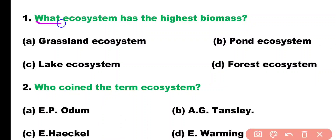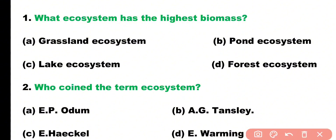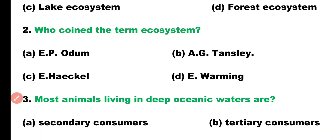Question number one. What ecosystem has the highest biomass? Options: grassland ecosystem, pond ecosystem, lake ecosystem, forest ecosystem. Correct answer is option D. Forest ecosystem has the highest biomass among the given options.